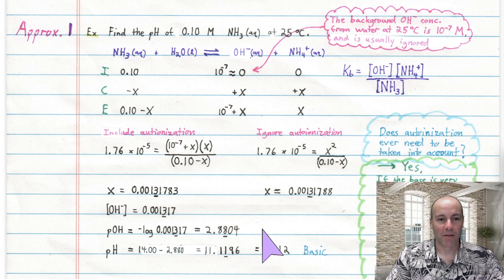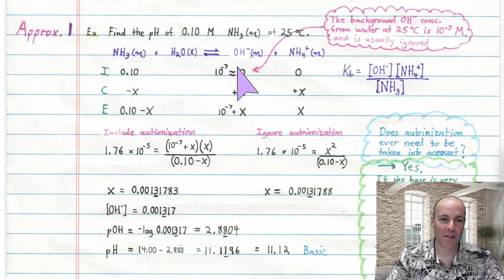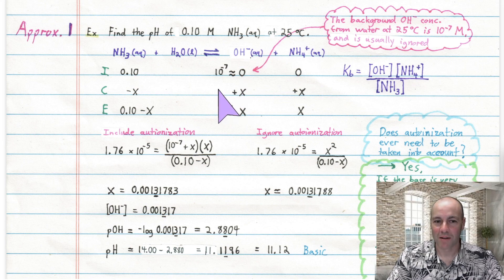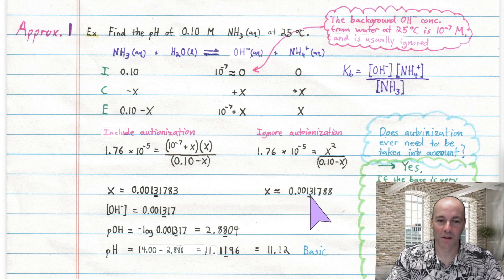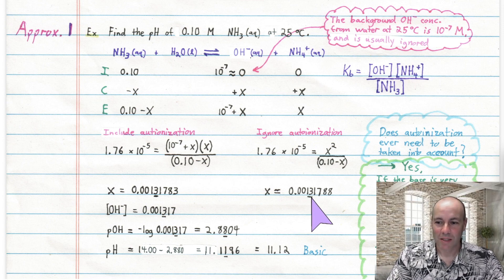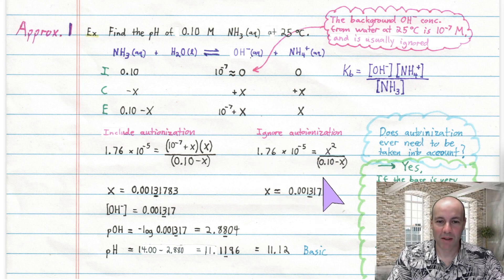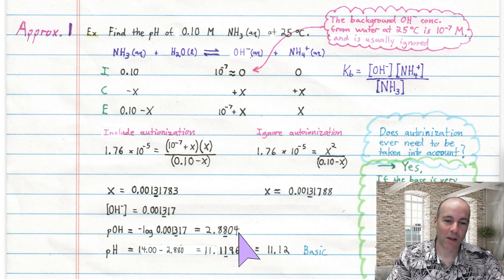What would have happened if we had ignored the autoionization of water? If instead of 10⁻⁷, we said hydroxide was just 0 at the start, then at equilibrium it would just be X. That gives a simpler equation to solve, and solving for X still gives 0.0013 — the same answer. So we could have ignored the autoionization of water here, calculated the pOH, and gotten the same pH.